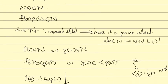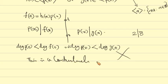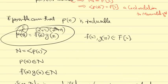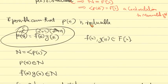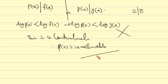Comparing degrees of p(x), f(x), and g(x) gives a contradiction. Therefore, p(x) is irreducible. The contradiction arose from assuming p(x) is reducible. Therefore p(x) is irreducible. Proof of the forward direction is complete.